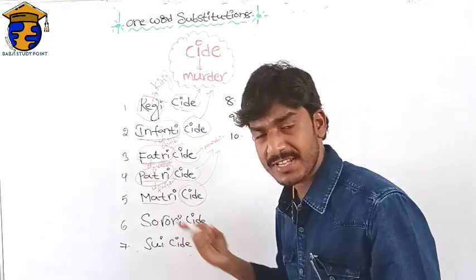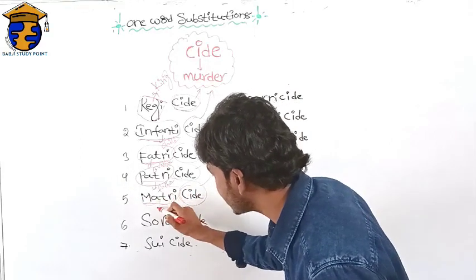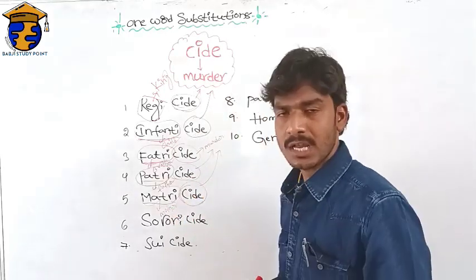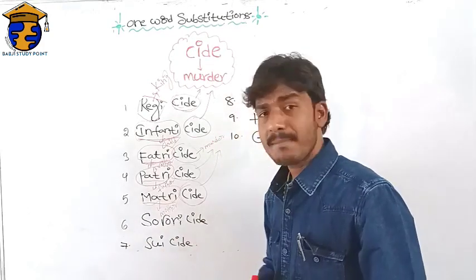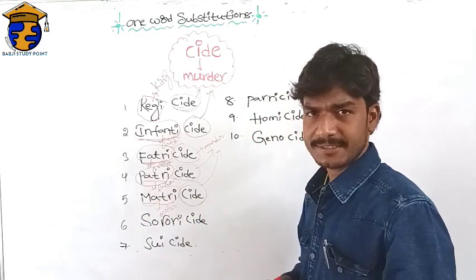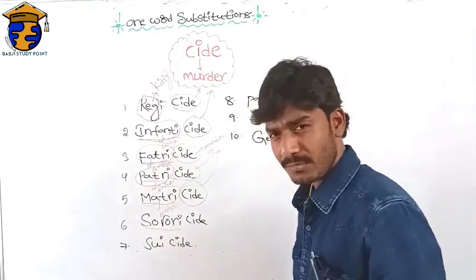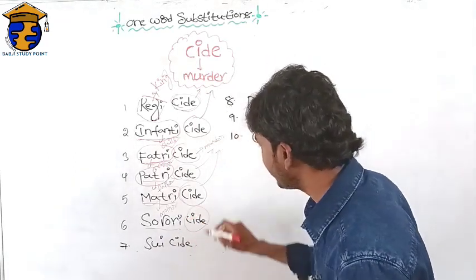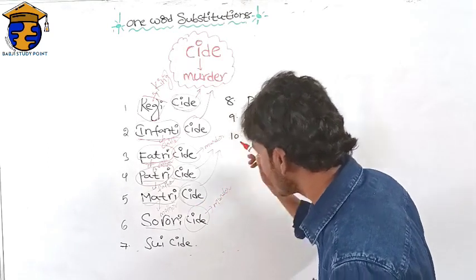What is the meaning of the prefix 'matri'? 'Matri' means mother. So the murder of a mother is called matricide.